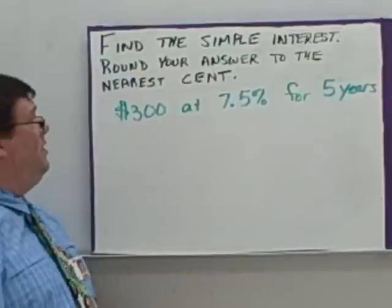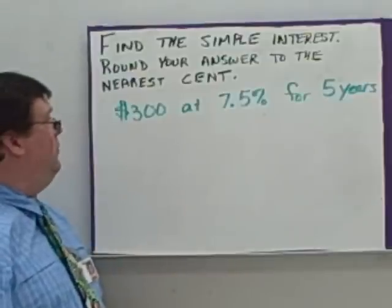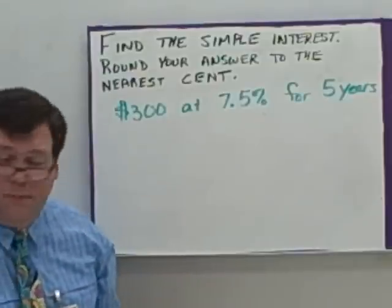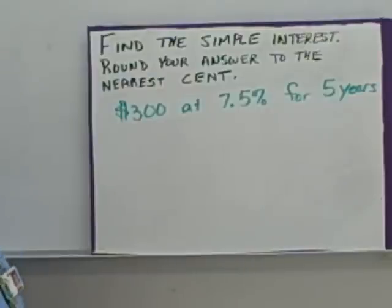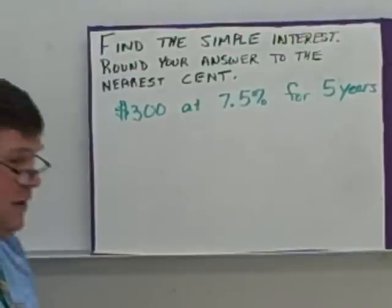Find the simple interest — round your answer to the nearest cent. Here's the first example we're going to work with: $300 at 7.5% interest for five years.